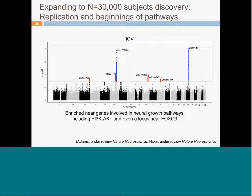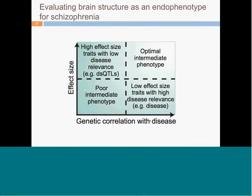The ENIGMA consortium continues expanding with more subjects and new phenotypes. The newest analysis shows we're identifying more and more genetic variants associated with brain structure — variants in genes involved in neural growth pathways including PI3K and AKT, and even near FOXO3, which is known to be involved in brain size. Importantly, all the methods I'm going to discuss for evaluating brain structure as an endophenotype for schizophrenia can be applied to evaluating brain structure for any other trait with a GWAS — for example, addiction traits.